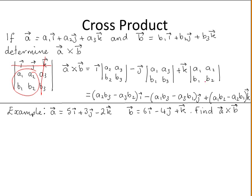That leaves us with A1, A2, B1, and B2 for the k term. To find the determinant of a 2 by 2 matrix with entries A, B, C, D, it equals A times D minus B times C. So the i term gives A2 times B3 minus A3 times B2. The j term gives A1 times B3 minus A3 times B1, and the k term gives A1 times B2 minus A2 times B1. That is the formula for the cross product.